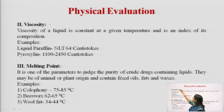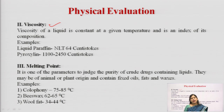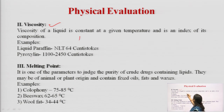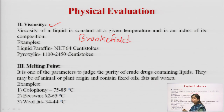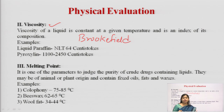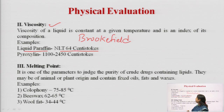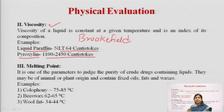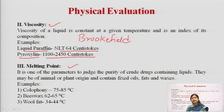The next parameter is viscosity, generally performed for liquid substances such as honey, certain oils, or other substances. The Brookfield viscometer is generally used for determination of viscosity. We can determine the rheology of a particular drug. For example, liquid paraffin viscosity should not be less than 64 centistokes, while pyroxylene has a limit of 1100 to 2450 centistokes.